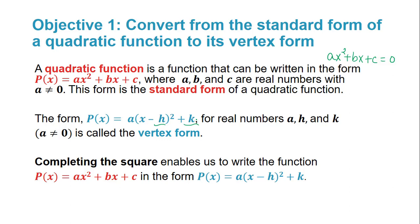Our question will be: how can we go from the standard form to the vertex form? We did this back in section 3 when we talked about quadratic equations and different methods to solve them. One of them was the method of completing the square — that is, if we can write a trinomial as a perfect square trinomial, we can write it as a binomial square.